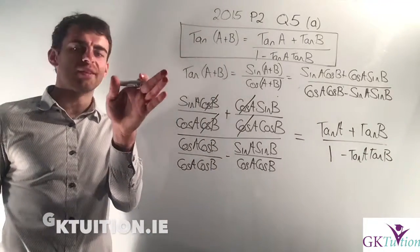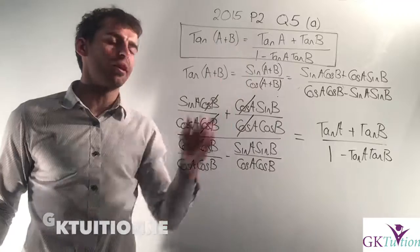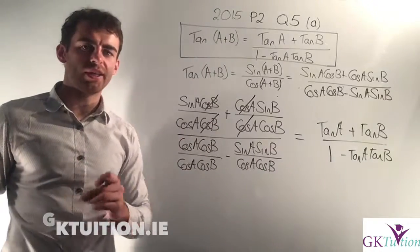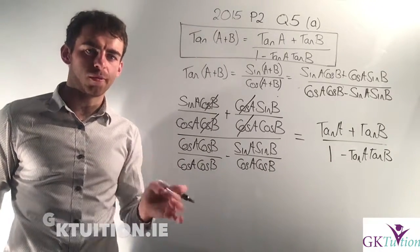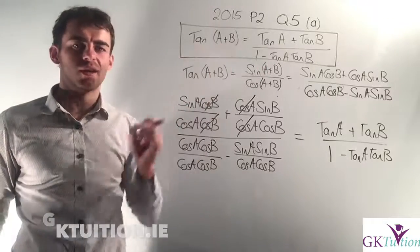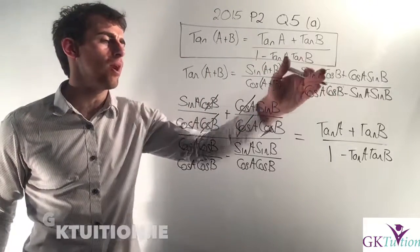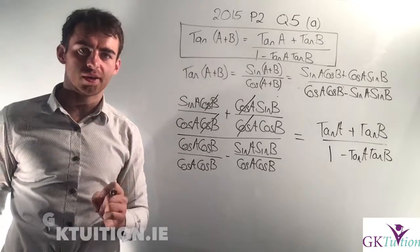So I started off with my left hand side and I've ended up with the right hand side. I've ended up proving what I needed to prove. And notice that we only used formulas that preceded this one in the log tables. I used compound angle formulas and I used formulas from page 13 in my log tables.